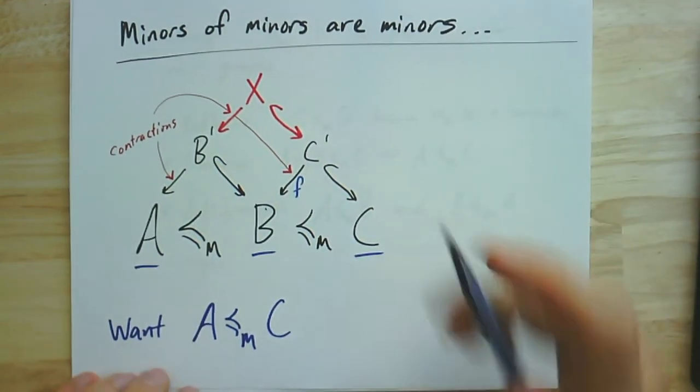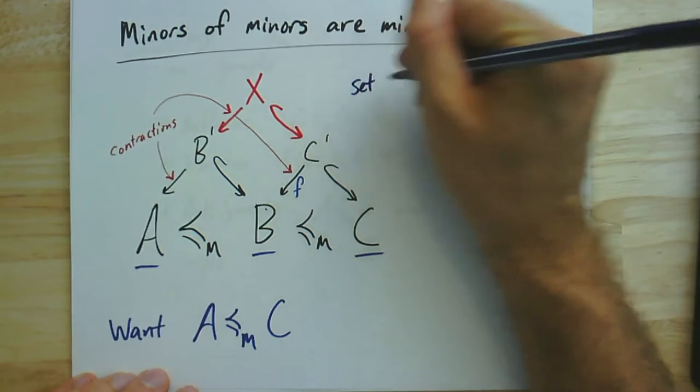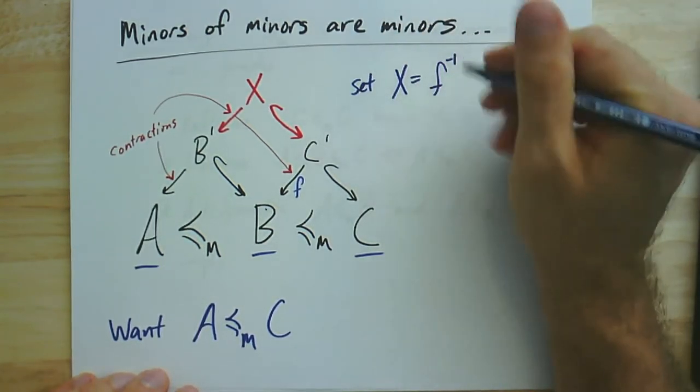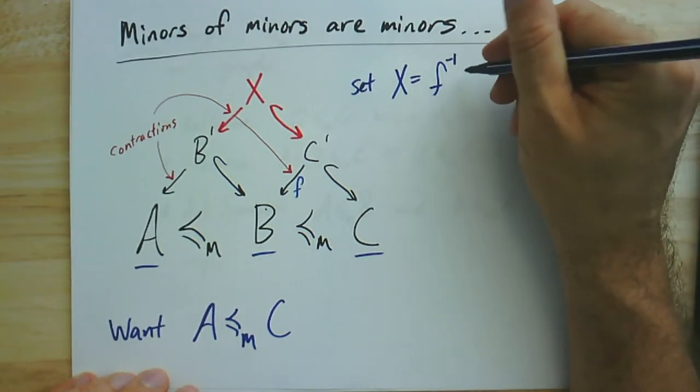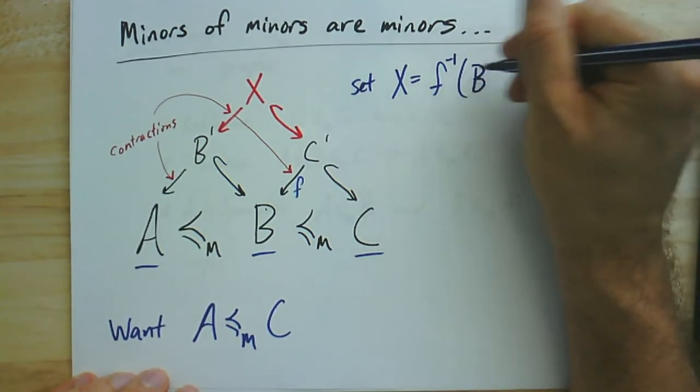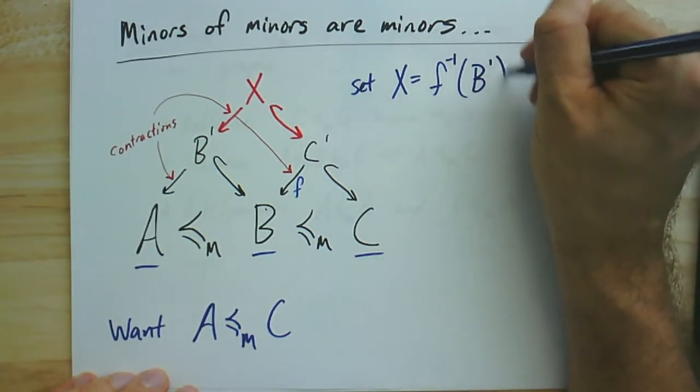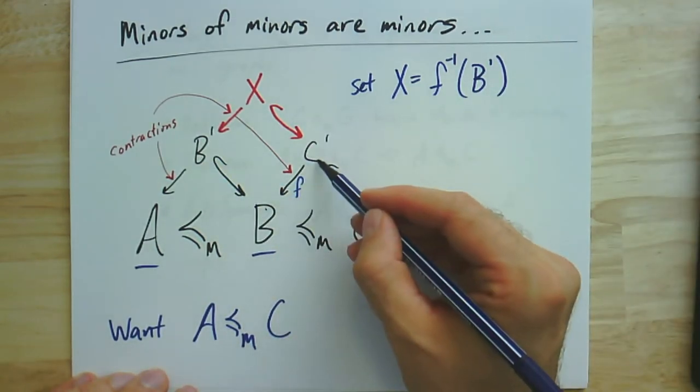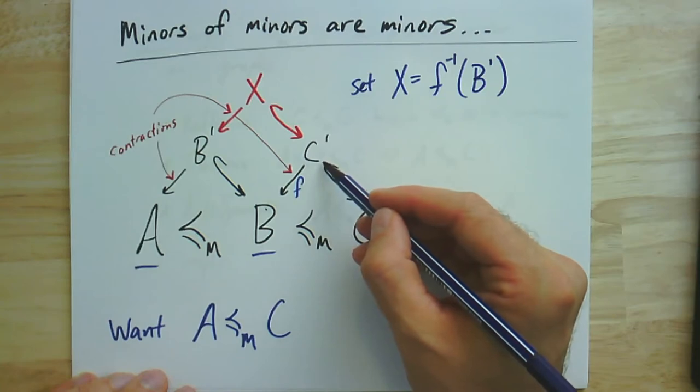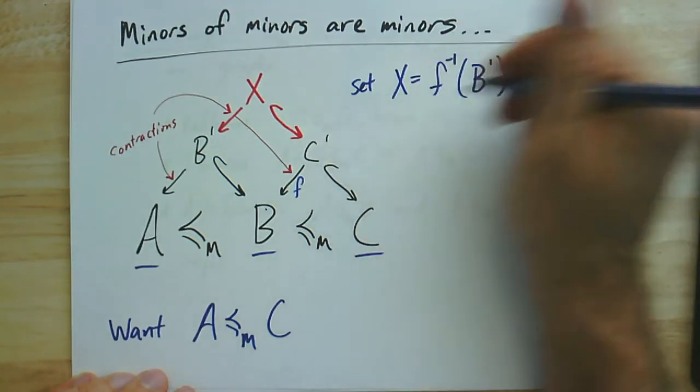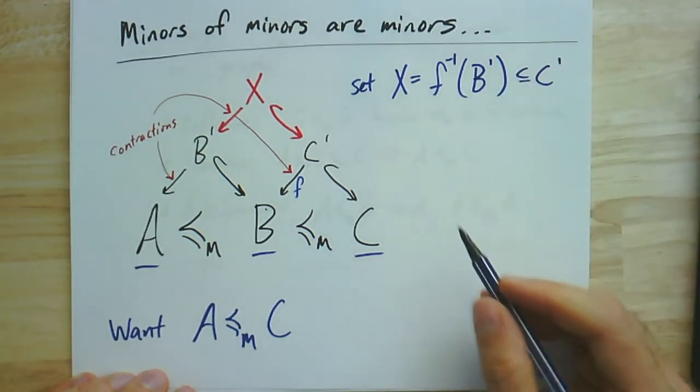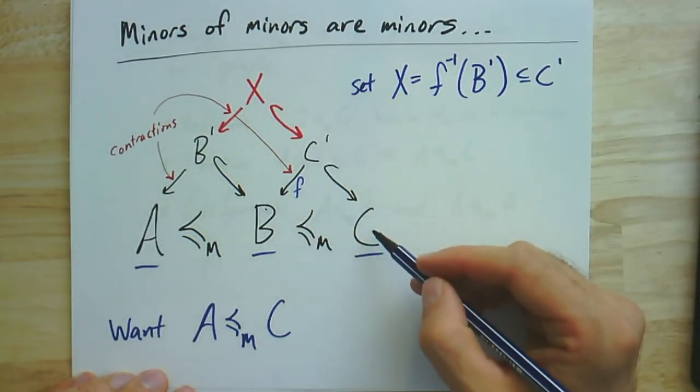And it turns out the exact things you need to keep, what you'll set X to be, is just the preimage of F of the subgraph B prime. So B prime is a subgraph of B. So we can take its preimage, and that will give us a subgraph of C prime. So that's contained in C prime. That's my subgraph. It satisfies this relation here.